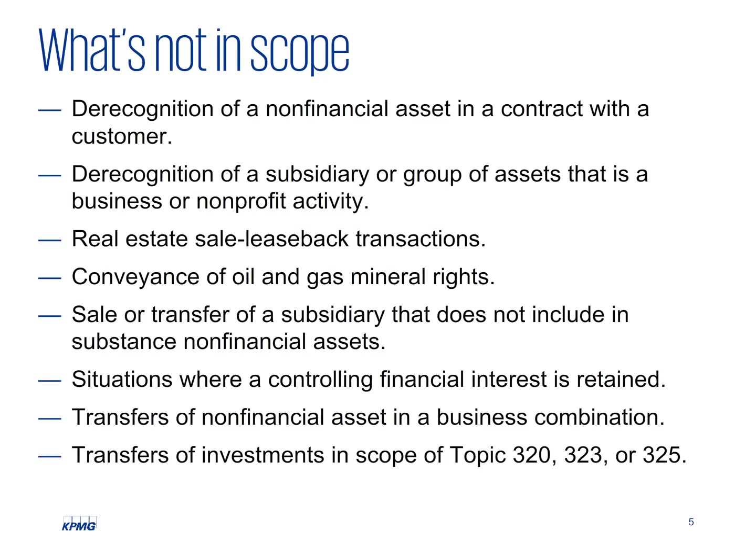A transfer of anything that meets the definition of a business is excluded from the scope of 610-20, as well as transactions that are in the revenue guidance — i.e., those with customers — conveyance of mineral rights, the sale or transfer of a subsidiary that doesn't include in-substance non-financial assets, situations where you have a controlling financial interest retained, transfers under Topic 805 for business combinations, and the transfer of investments including equity method investments. With regard to sell-leaseback transactions of real estate, after the effective date of the new leasing standard, that standard will address all sell-leasebacks regardless of the nature of the leased asset. If you have a business that's getting derecognized, you would be in the scope of Topic 810. The same goes for situations where a controlling financial interest is retained.